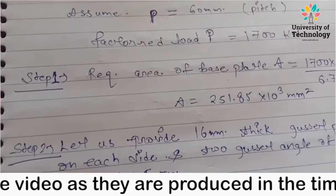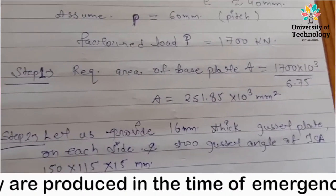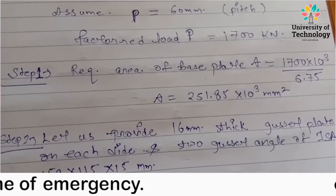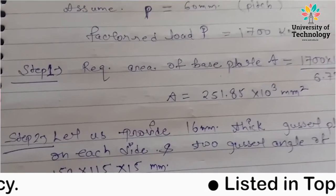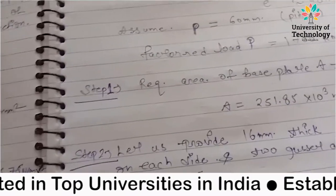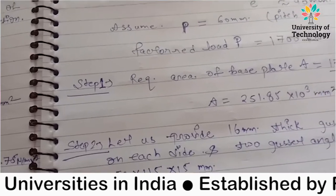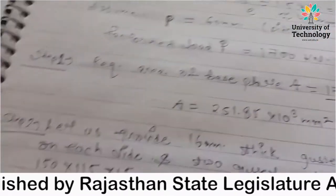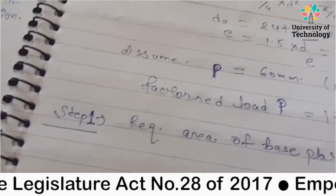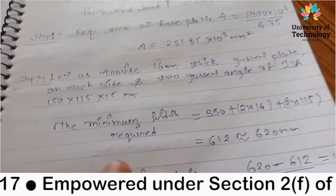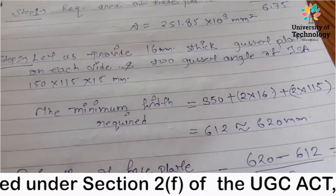Step 2: Let us provide 16mm thick gusset plate on each side and two gusset angles of ISA 150 into 150 into 15mm. Whatever area is near the section, we will get that section. For bolted connection, minimum plate thickness is 16mm. Minimum width required for the bolted connection is D plus 2 into 2 into the thickness of gusset plate plus 2 into the smaller side length of the ISA section.